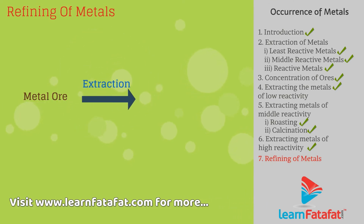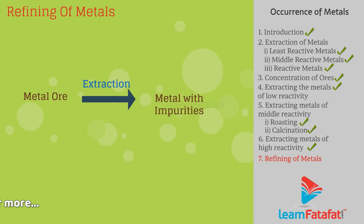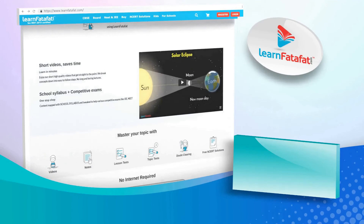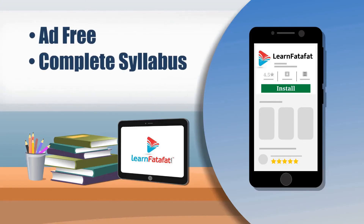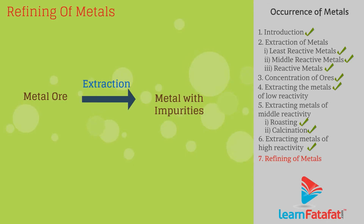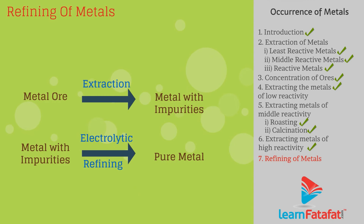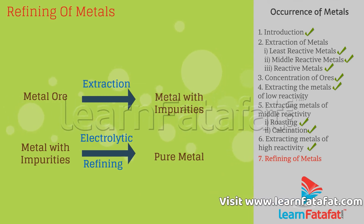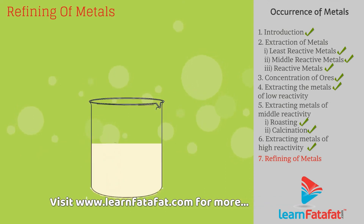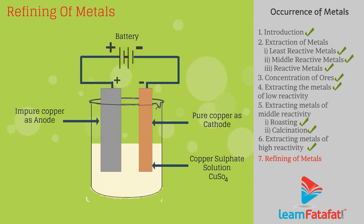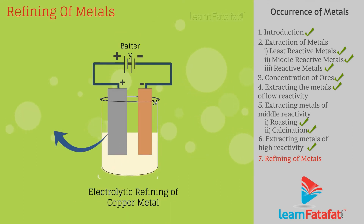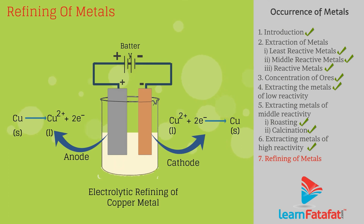Refining of Metals. The metals extracted from the extraction processes are not pure and contain impurities. In order to remove these impurities and obtain metals in pure form, the widely used technique is electrolytic refining. In this method, the impure metal is made the anode and a thin strip of pure metal is made the cathode. They are placed in a solution of metal salt which is used as electrolyte. On passing the current, metal from the anode dissolves in the electrolyte and an equivalent amount of pure metal from the solution is deposited at the cathode.